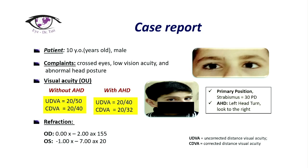Regarding the strabismus, the degree was 30 prism diopters, and it was the same with and without glasses, for both near and far distance. The abnormal head deviation was to the left, and the gaze was directed to the right — the patient was turning his head to the left while looking to the right.